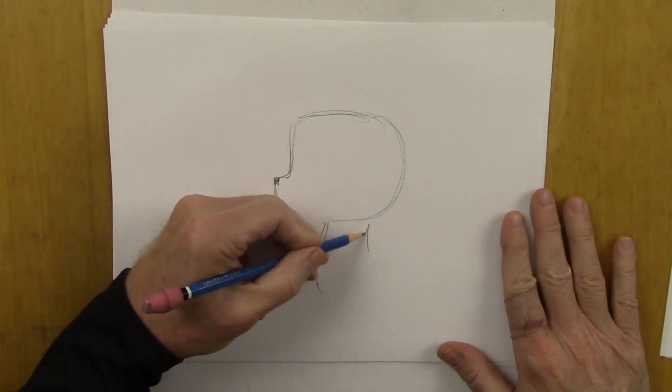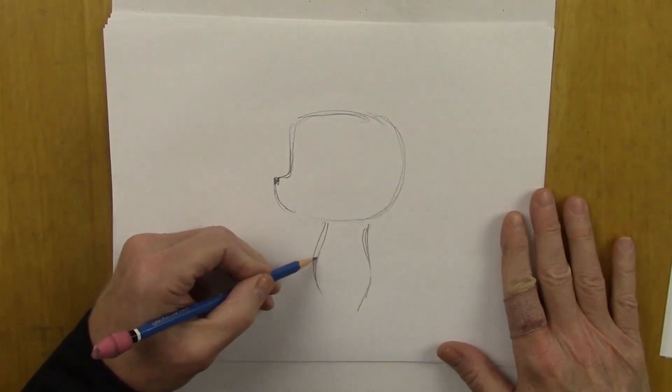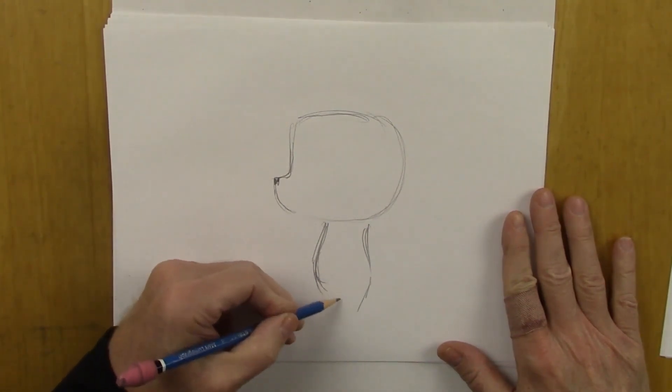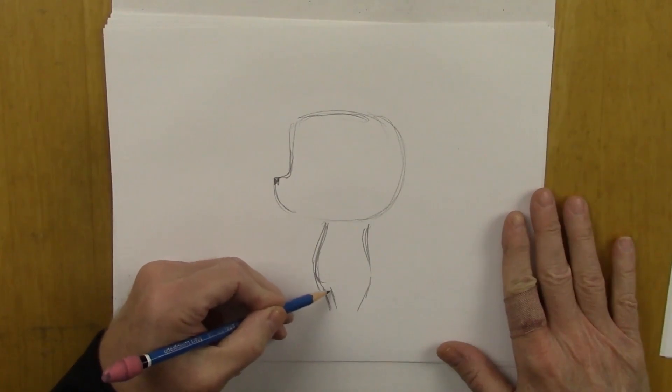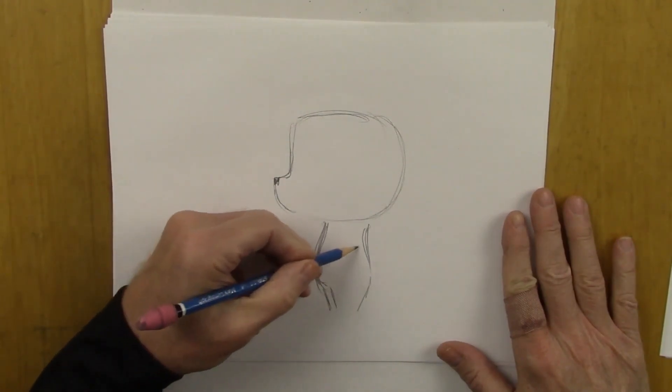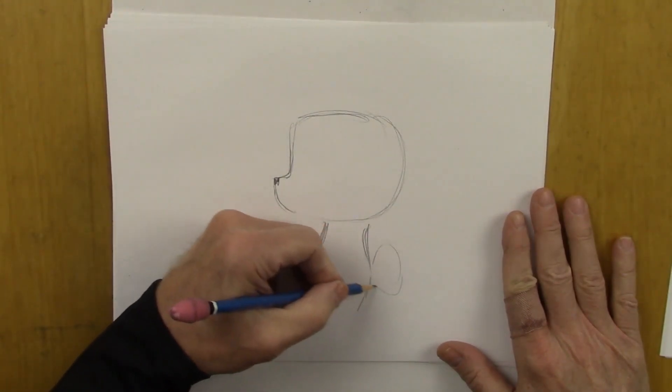Then, a little pudgy look, like this. This is the tummy. This is nice and pudgy. Legs come down. Look at that. Just like that. And of course, there's the tail.